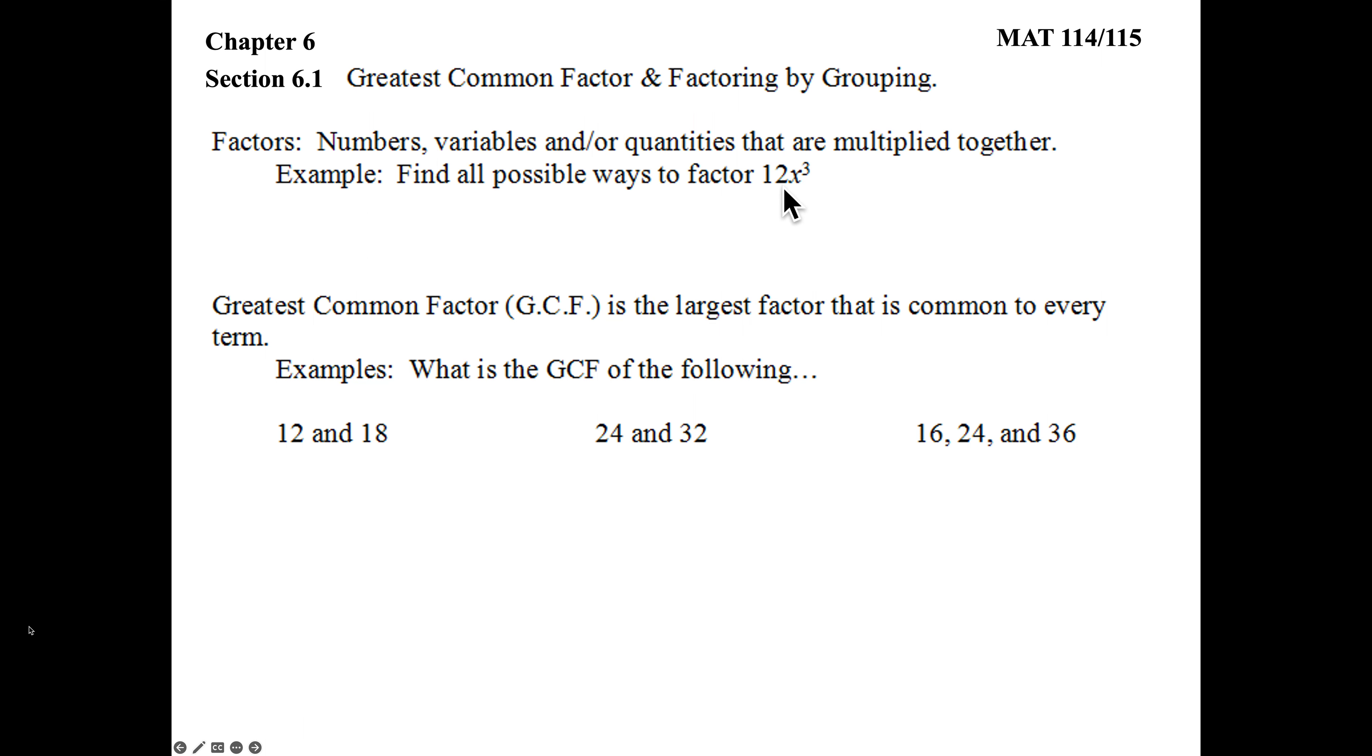Quantities can be anything in a grouping symbol that are multiplied together. Find all possible ways to factor 12x³. Examples: 2x times 6x², multiply it to two factors. I could have 12x times x². Two factors being multiplied together. We could have 4x times 3x². Two factors being multiplied together.